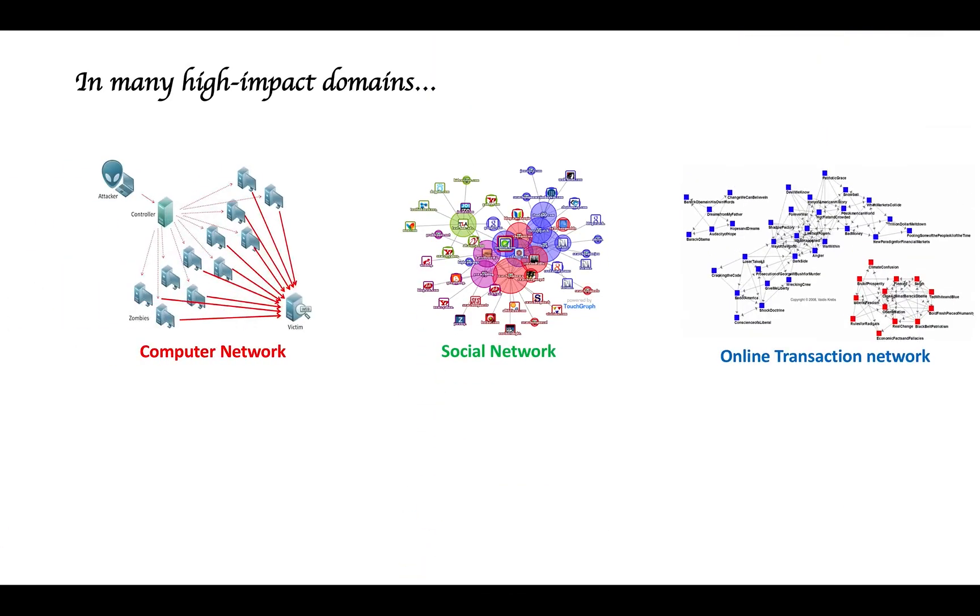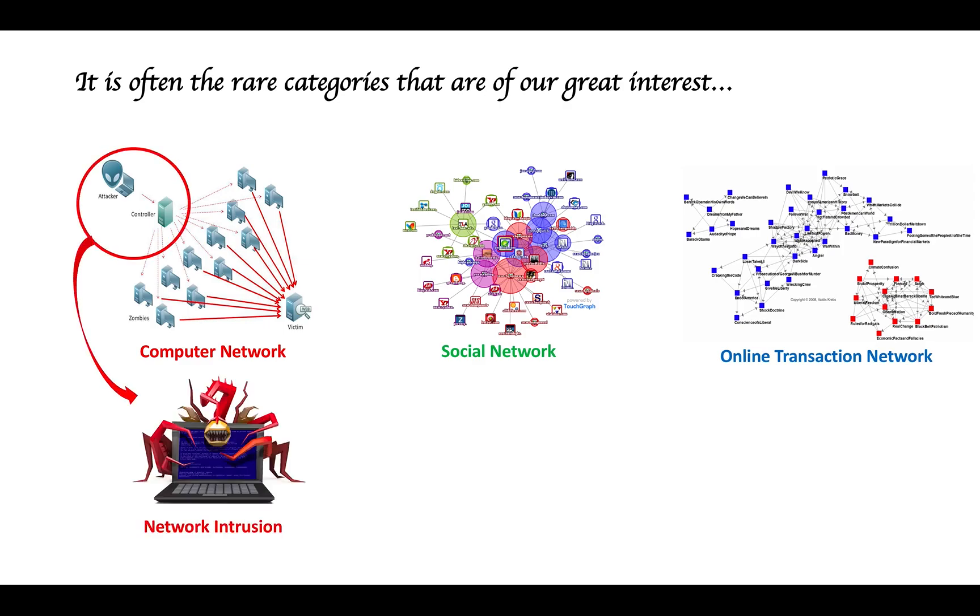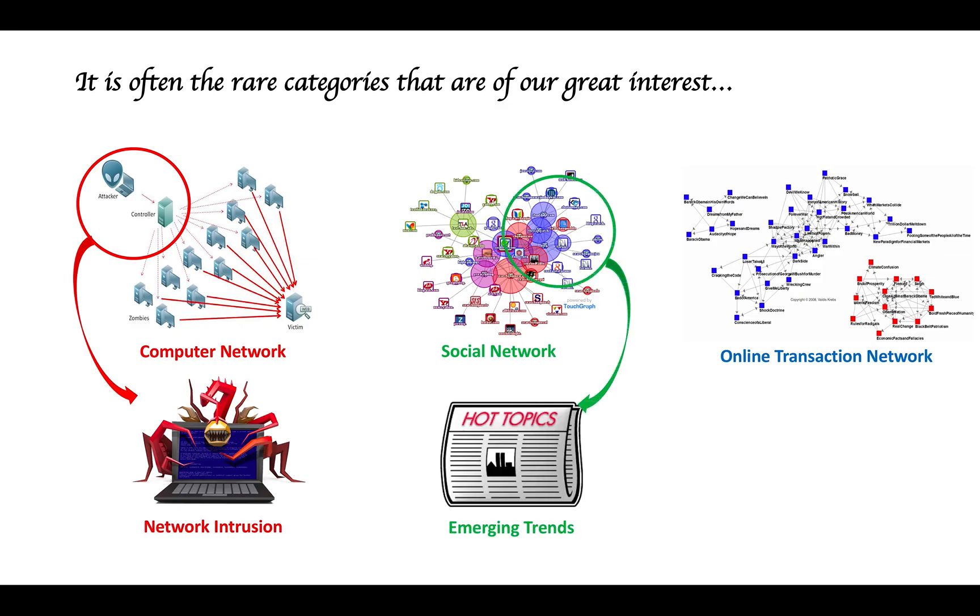In many high-impact domains, it is often the rare categories that are of great interest in various applications, such as network intrusion detection in computer networks, emerging trend detection in social networks, and money laundering detection in online transaction networks. As a result, rare category characterization becomes a fundamental learning task which aims to accurately characterize the rare categories given limited label information.